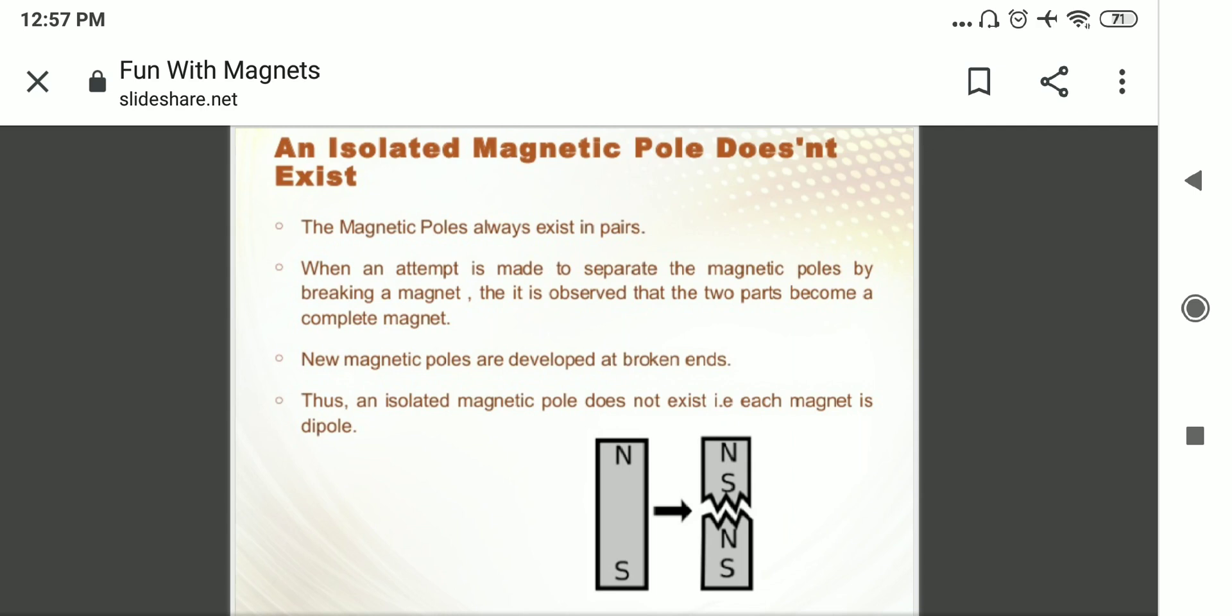If you want to check it, you can further divide these two poles in four parts. You can further divide these two parts of the magnet, then again they will behave like a complete magnet. Means two poles will be there. If one is north, automatically second will become the south pole.